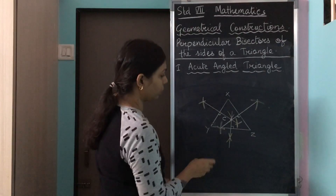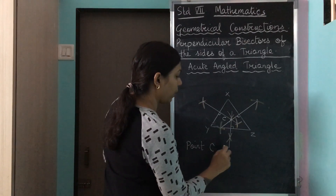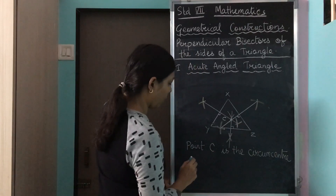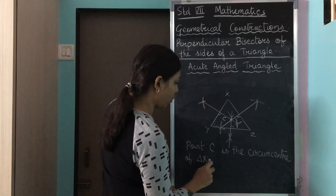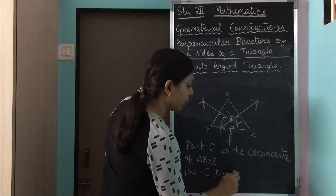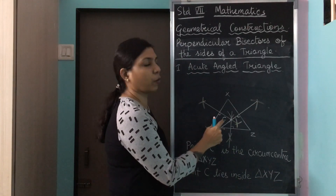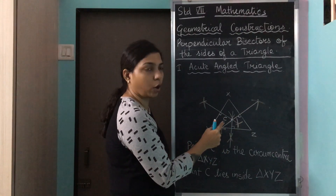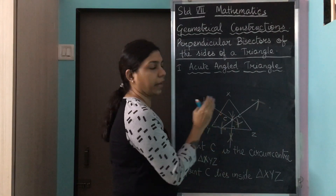So we will write down what we have drawn. Point C is the circumcenter of triangle XYZ, and point C lies inside triangle XYZ. This point, which is the meeting point of all three perpendicular bisectors, is called the circumcenter. Its position is inside triangle XYZ.